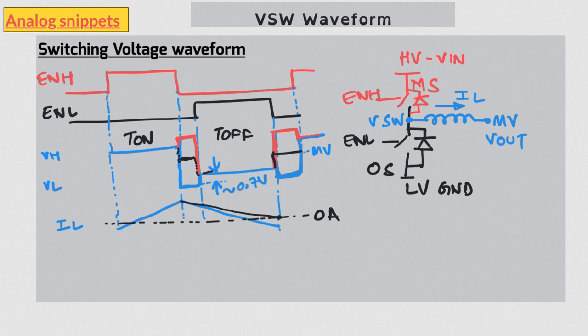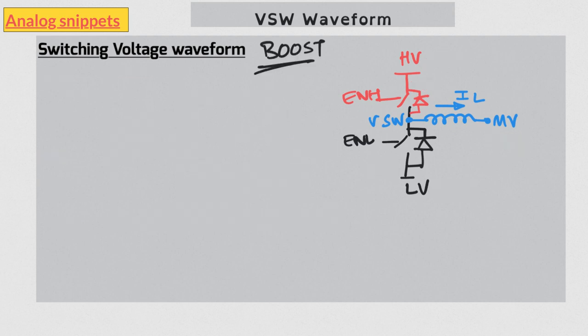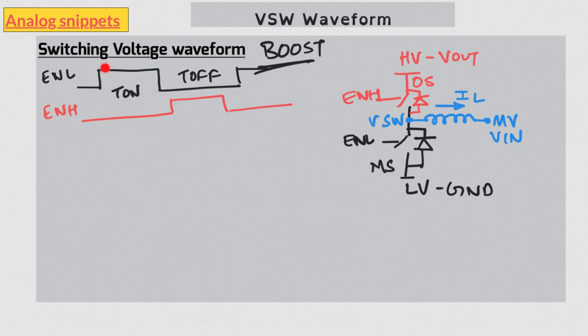I want to quickly look at the boost waveform before we finish the video. And IBB will be pretty similar to the buck. In case of boost, output is the high voltage, the low voltage is still the ground, and input is the middle voltage. Low side switch is our main switch and high side switch is the other switch, and so low side on is T_on.